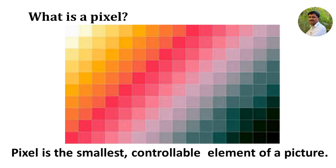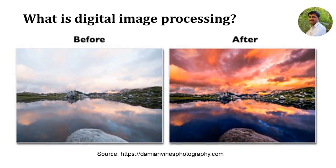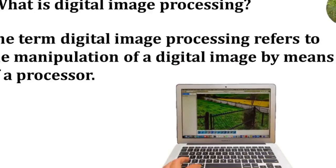After knowing what a pixel is and what a digital image is, let us now consider digital image processing. For a quick understanding of the term digital image processing, consider two images. The first image is processed using some algorithm in the computer to have a clear perception. You know that generally our passport photos or any photos developed at studios are smarter than our real appearance. This is because these photos are processed using digital computers. Hence, the term digital image processing refers to the manipulation of a digital image by means of a processor. In this subject, you are going to study the theory and algorithms behind digital image processing.